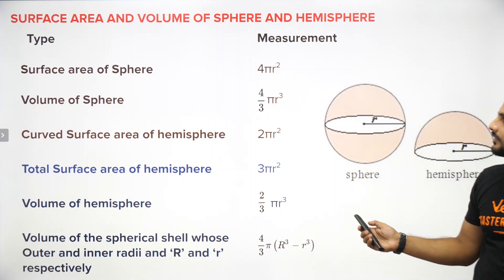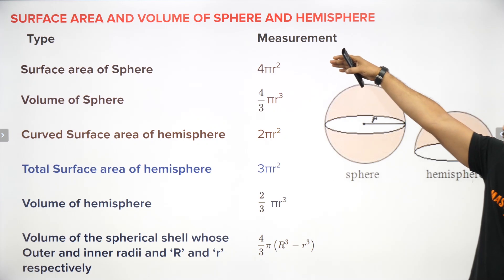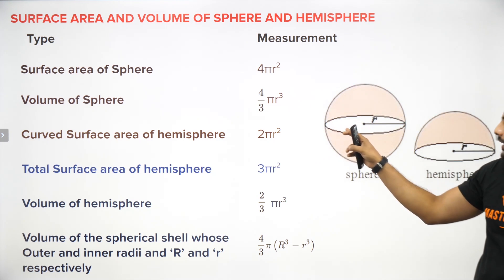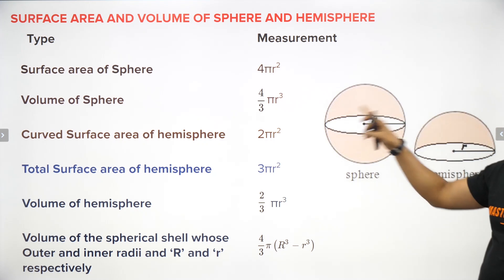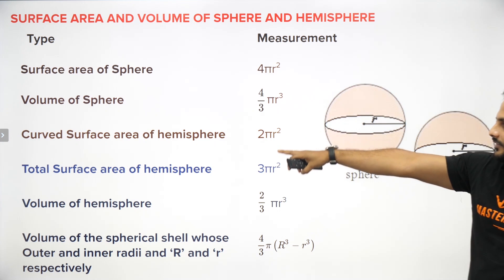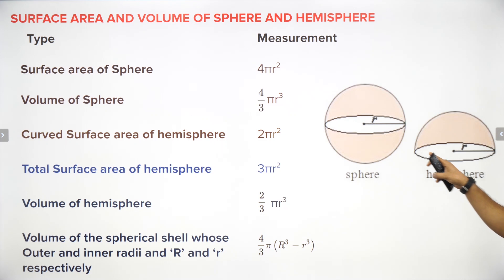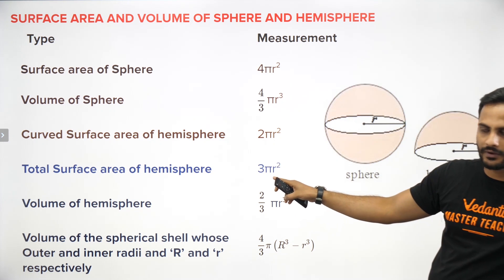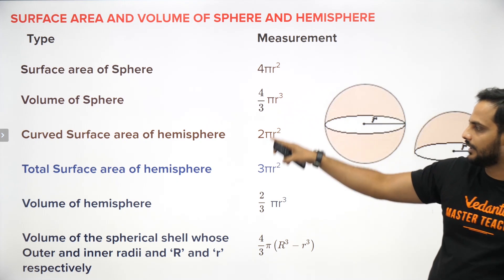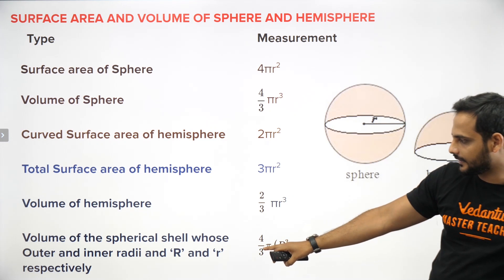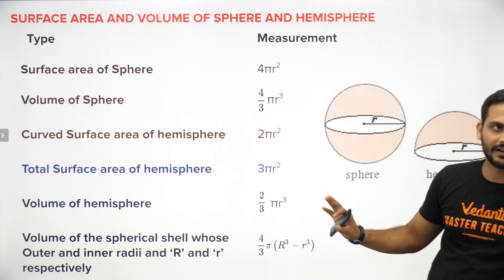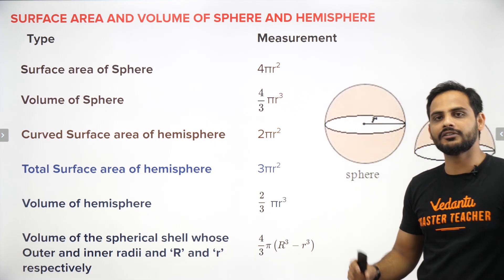For a sphere: surface area is 4πr², volume is (4/3)πr³. Curved surface area of a hemisphere is half of 4πr², which is 2πr². Total surface area of a hemisphere includes the base: 2πr² + πr² = 3πr². Volume of a hemisphere is (2/3)πr³. For a spherical shell with outer and inner radii given, the volume is simply volume of outer minus volume of inner.